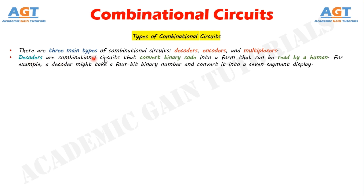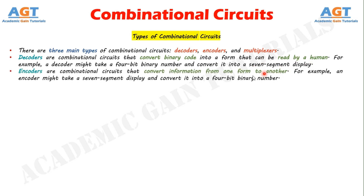Decoders are combinational circuits that convert binary code into a form that can be read by a human. For example, a decoder might take a 4-bit binary number and convert it into a 7-segment display. Encoders are combinational circuits that convert information from one form to another. For example, an encoder might take a 7-segment display and convert it into a 4-bit binary number.